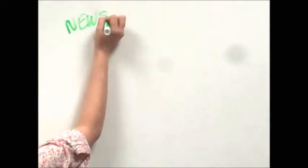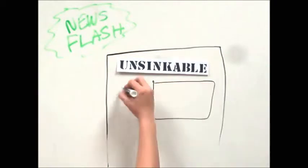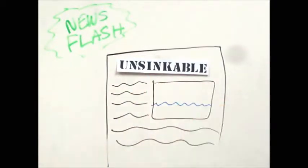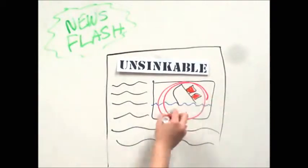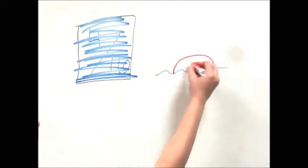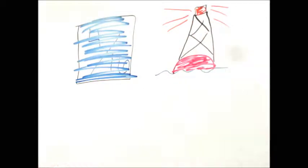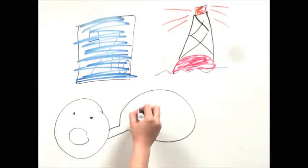A 1910 brochure advertising the maiden voyages of the Titanic and a similar ship called the Olympic said that, as far as it is possible to do so, these two wonderful vessels are designed to be unsinkable. The Titanic was designed so that four of its 16 compartments could be flooded without endangering its buoyancy. The myth of its unsinkability grew and many passengers believed that the ship could not sink.